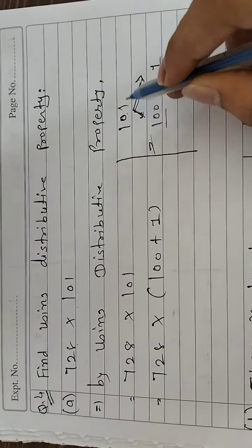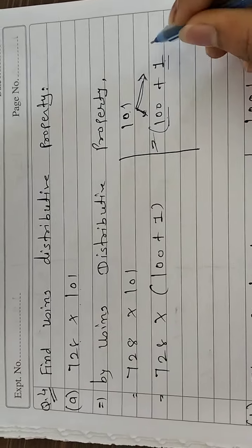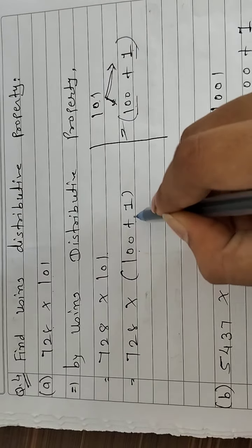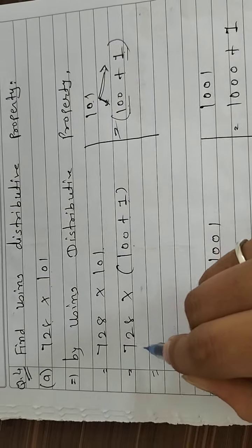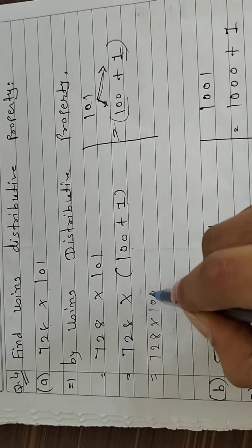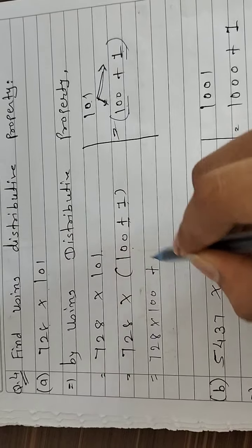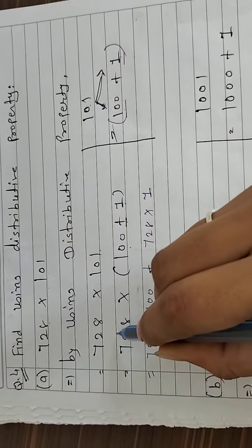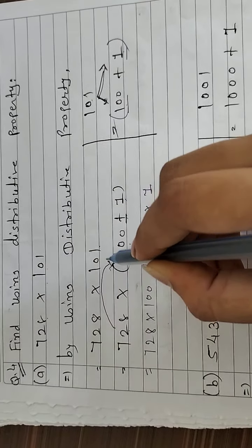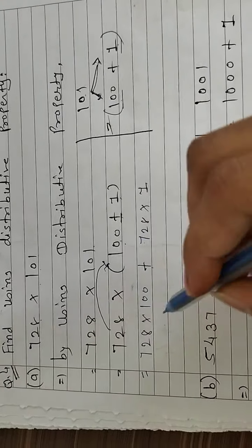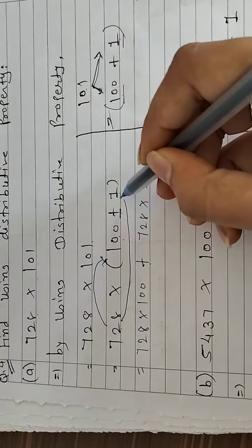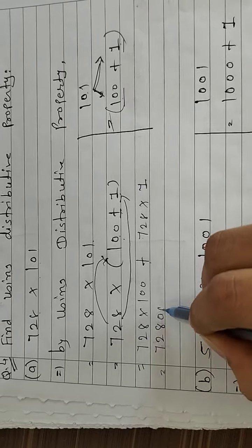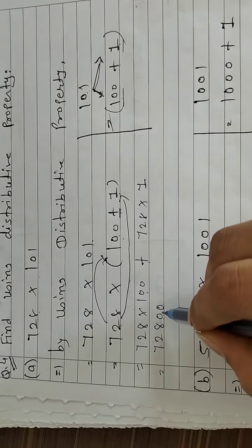101 means 100 plus 1. After breaking it, we will multiply 728 by 100, then add the sign, and multiply 728 by 1. When you multiply 728 by 100, we add two zeros. Then 728 multiplied by 1 gives 728 itself. Adding both together gives us the final answer.